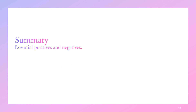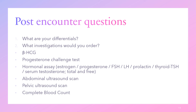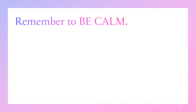Lastly, you want to be able to summarize the essential positives and negatives. The eight minutes are over and you go on to the post-encounter questions. What could be the differentials, as stated in the earlier parts of this video? What investigations would you order? These include beta-HCG, progesterone challenge test, hormonal assay including estrogen, progesterone, FSH, LH, prolactin, TSH, and serum testosterone (total and free). You could also order an abdominal ultrasound scan, pelvic ultrasound scan, and a complete blood count. That is the end of your NAROSKI station. Remember to be calm. Thank you.